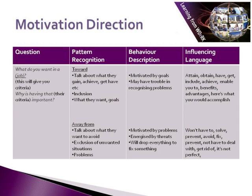The next metaprogram is about motivation direction — whether people move towards goals they want to achieve, or away from things they want to avoid. There are two questions to help you identify which of these someone veers towards. Firstly, you ask them what do you want in a job? And then whatever answer they give you, you ask them why that answer is important to them. If they are towards, they will tell you about the things that they want.